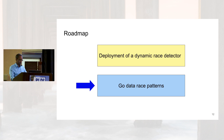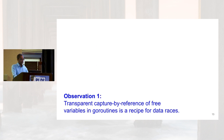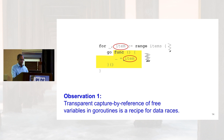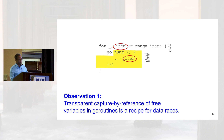We have sifted through all fixed and some yet-to-be-fixed data races and classified them based on their root cause — leading to the topic of patterns of Go data races. Observation one: transparent capture by reference of free variables in GoRoutines is a recipe for data races. In a for loop iterating over an array, each item launches a GoRoutine written as an anonymous function (a closure) that accesses the item. In Go, item is a free variable and is captured by reference. As multiple GoRoutines execute, the outer loop changes the item reference to point to the next array element, creating a write-read data race.